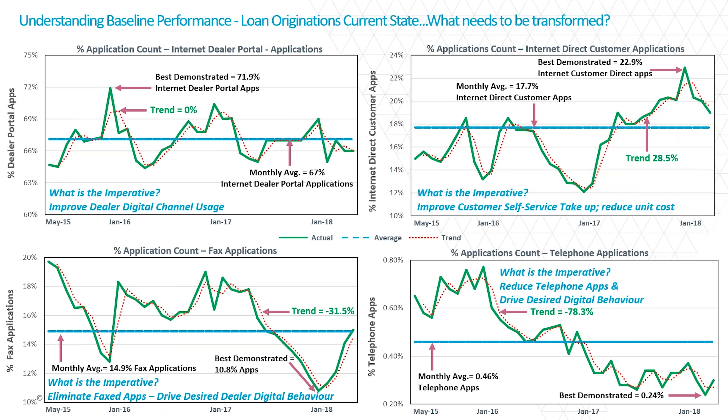In any operating model there needs to be analysis of omni-channel — or multi-channel distribution. What we needed to do, and what we suggest doing, is understand how applications are being funneled through the various channels available to dealers and customers. In this particular instance, there are four channels available within the current state operating model.